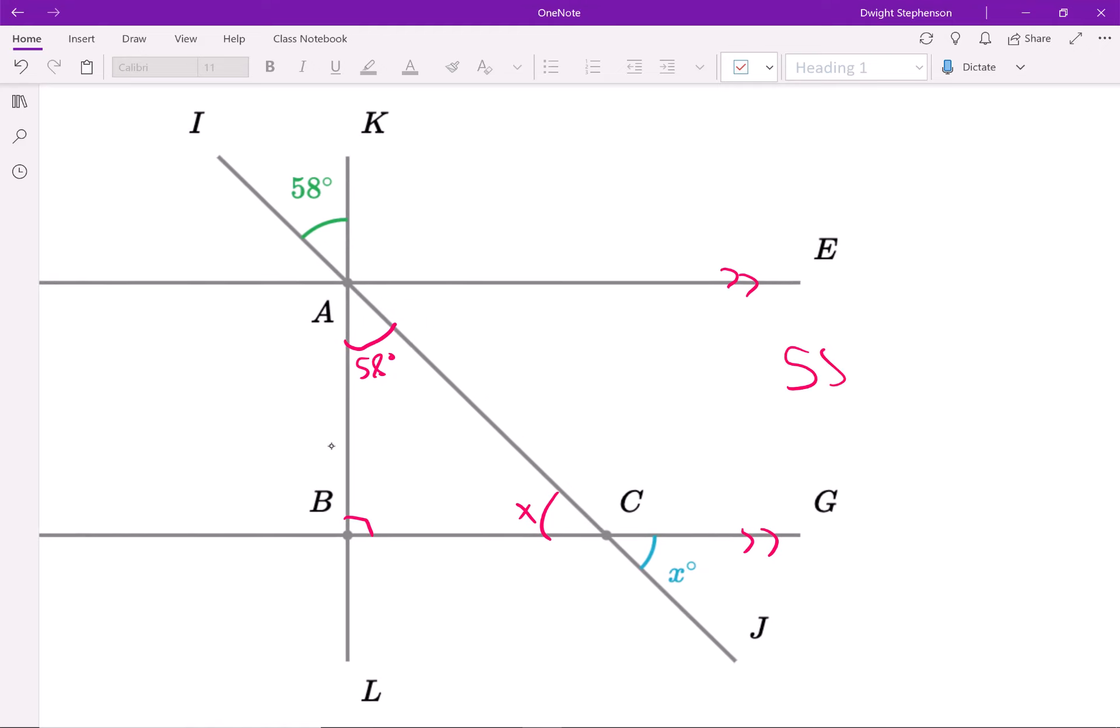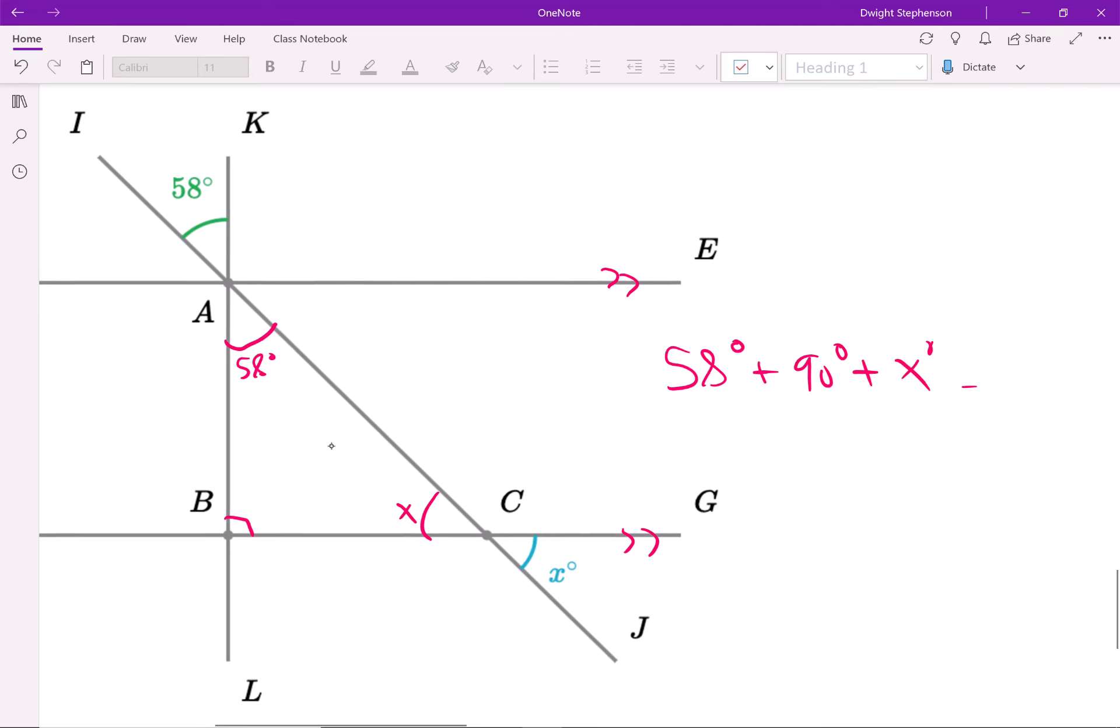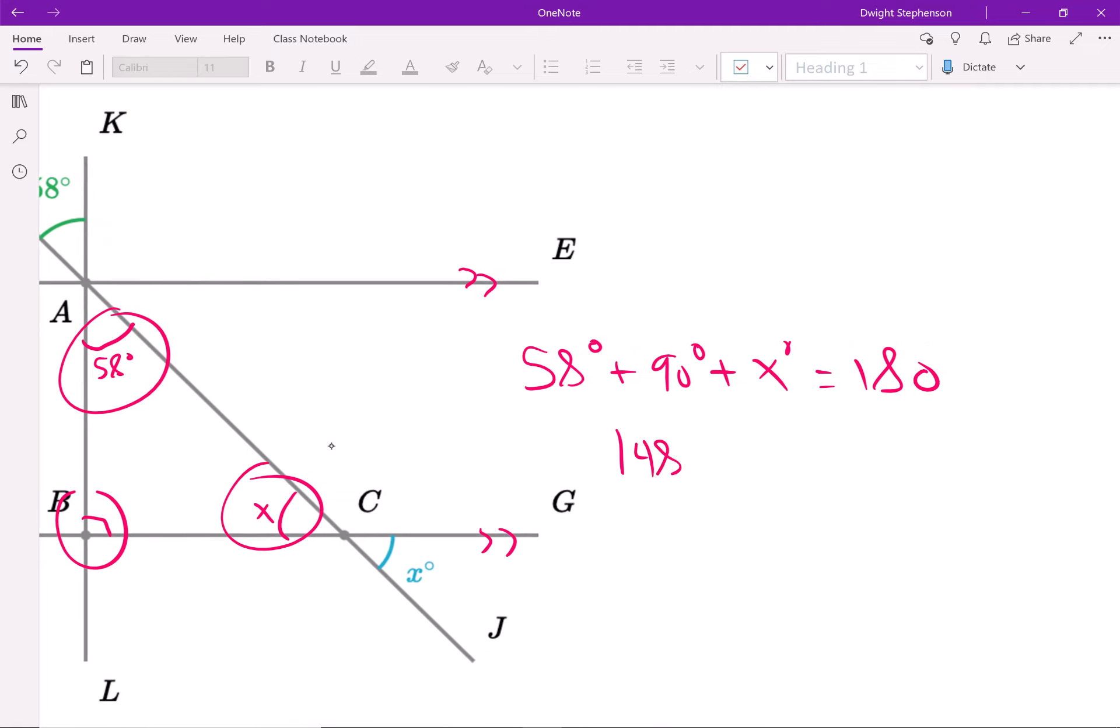So I know that if I add 58 degrees plus 90 degrees plus x degrees, I should get 180. I'm adding up three angles: this one, this one, and this one. And the sum of the angles in a triangle will always be 180. So this turns out to be 148 plus x equals 180.